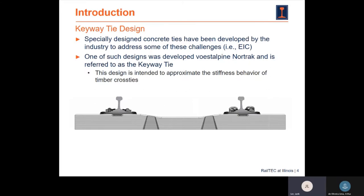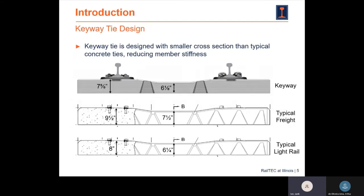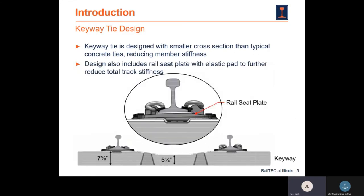Because of the problems mentioned previously, a specially designed concrete cross tie named the keyway cross tie has been developed by the company named Nordrack. The design of this keyway cross tie is intended to approximate the stiffness behavior of timber cross tie. If you take a closer look at the figures, the keyway cross tie is designed with smaller cross sections than typical existing concrete cross ties, and the keyway cross tie design also includes a rail seat with an elastic pad, which enables the cross tie to have a decreased stiffness value.